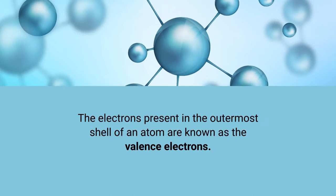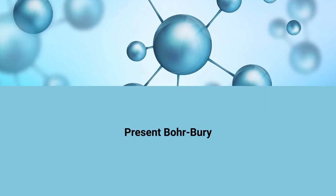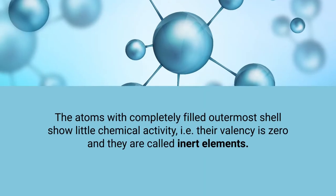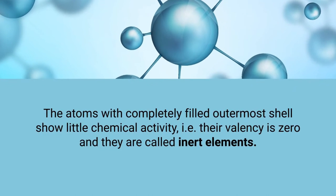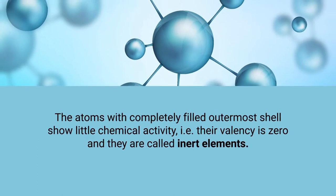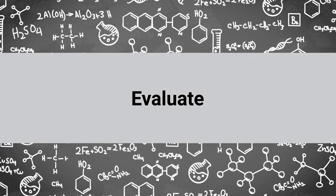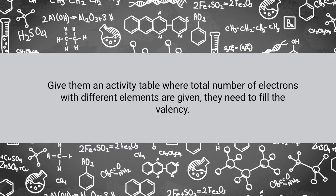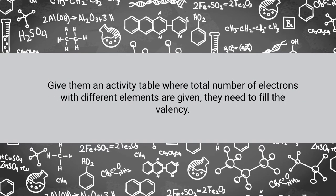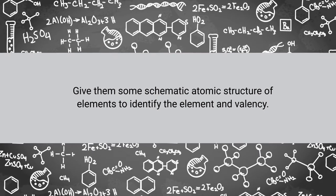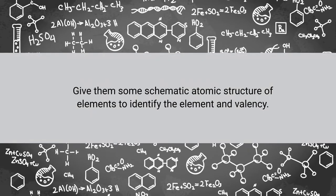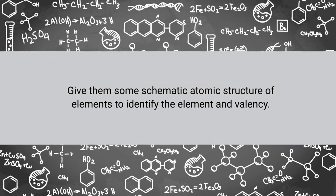The electrons present in the outermost shell of an atom are called valence electrons. There is a very famous concept called the Bohr-Bury principle, which explains the distribution of electrons in different shells in the atom of any element. You also introduce the concept of inert elements — atoms which have a completely filled outermost shell show very little or almost no chemical reactivity because their valency is zero, and they are called inert elements. For evaluation, you can give an activity table where total number of electrons with different elements are given and students fill in the valency, or give schematic atomic structures based on the Bohr-Bury principle for students to identify the element and its valency.